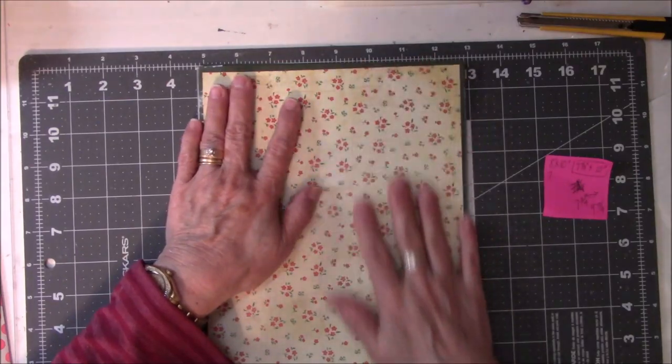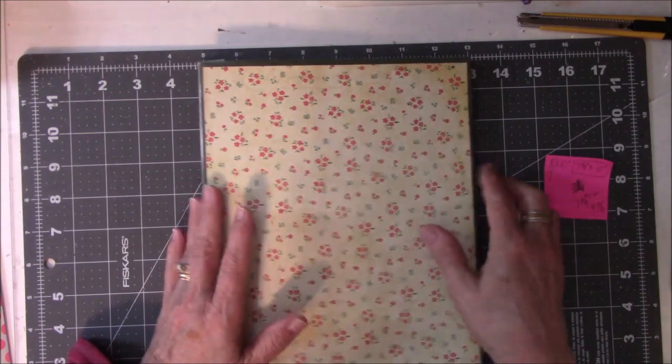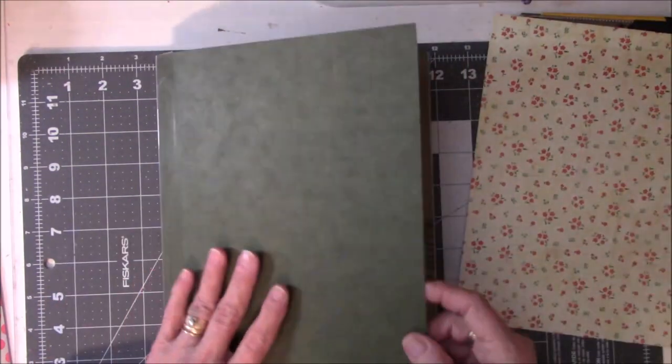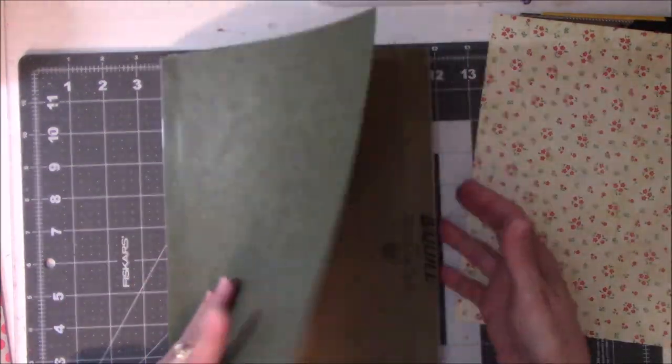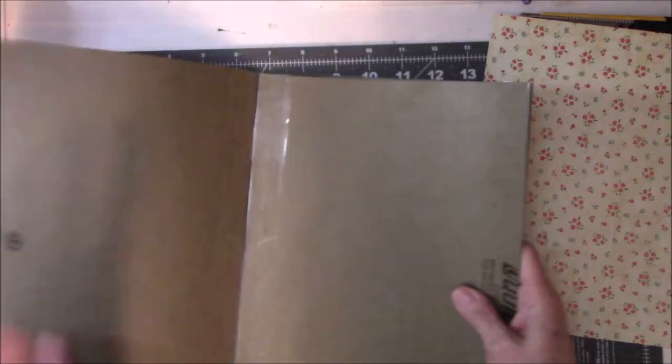I tried several different ways of gluing it down. I tried wet glue the first time and it made it too wrinkly. So then I used the ATG gun, automatic tape gun, to tape all the pieces of inside paper down on each one.